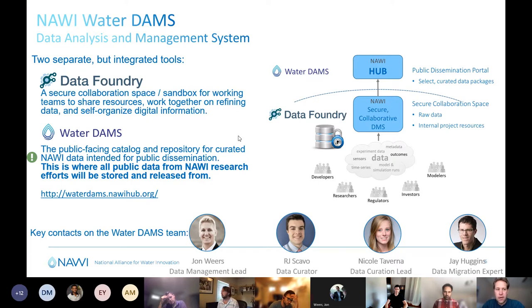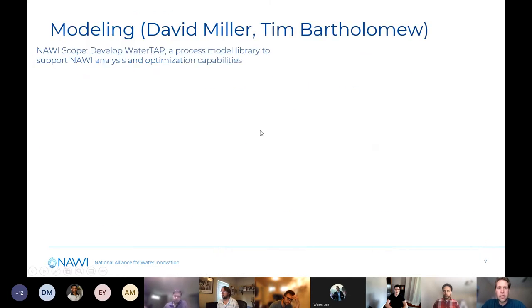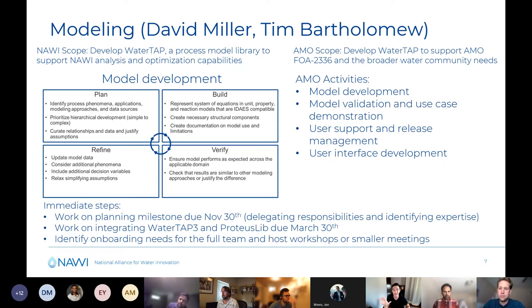Let's move on to the modeling area. For our modeling work, I'm showing two scopes because they're very closely related across the NAWI and AMO scope, and lots of the people here today are across both. For NAWI, we are specifically limited to model development — at the top it says 'develop WaterTap process model library to support NAWI analysis and optimization capabilities.'